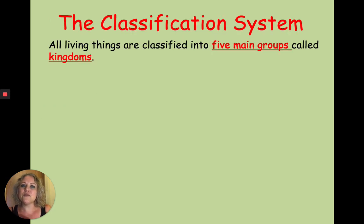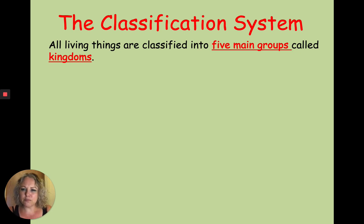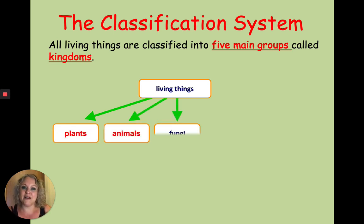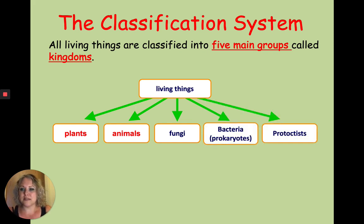The first thing we're going to talk about is the five main groups, called kingdoms. If you think about living things, you probably think of plants and animals — but there are actually five kingdoms. The others are fungi, bacteria, and protoctists. Plants and animals are the main ones, so that's probably what came to mind first.